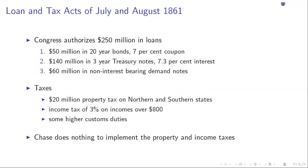They institute an income tax of 3% on all incomes over $800, and impose higher customs duties. So all of a sudden an income tax gets implemented. However, just because Congress passes the legislation doesn't mean things get done — Chase actually does nothing to implement the property taxes or income taxes, nothing as Treasury Secretary to collect this revenue.